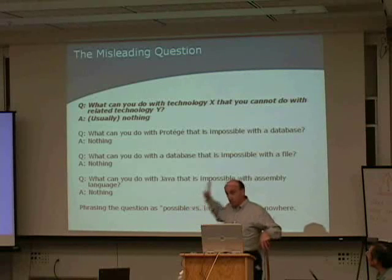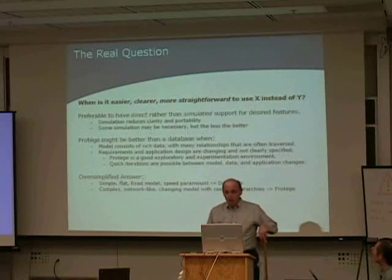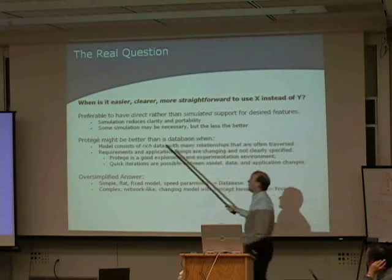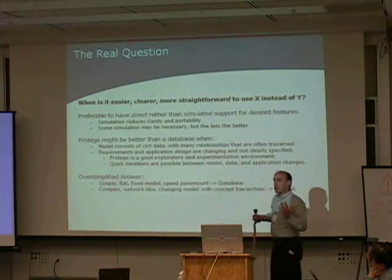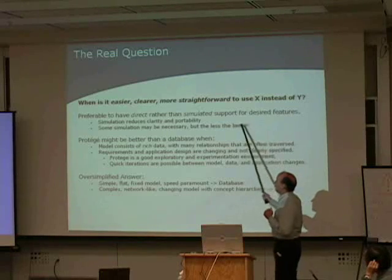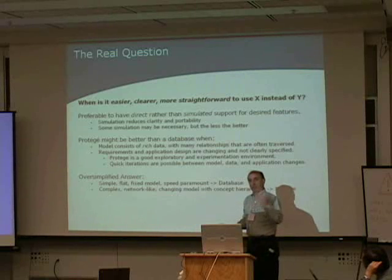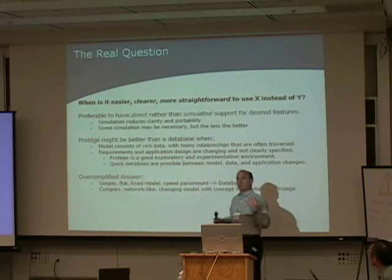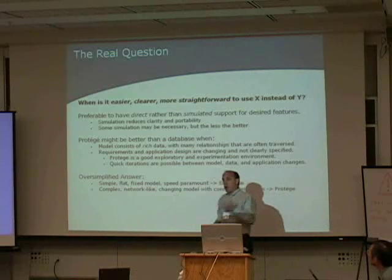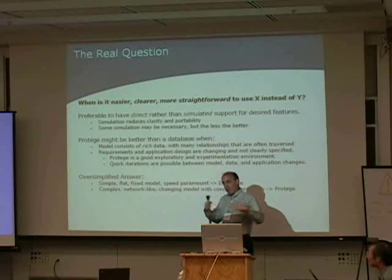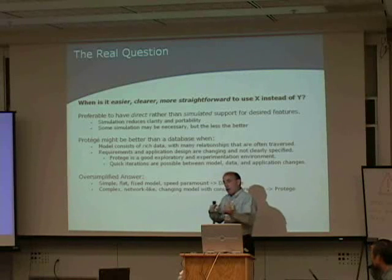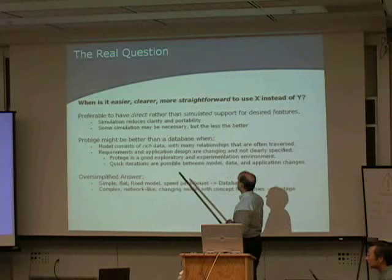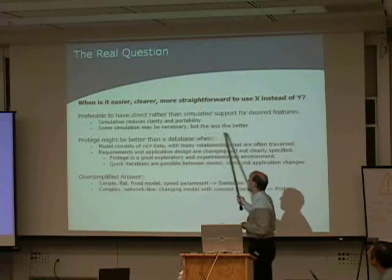The interesting and real question is: when is it easier, clearer, or more straightforward to use some technology X versus technology Y? In general, if your technology has direct support for the things you need, that's usually better than having simulated support. If you have direct support, people familiar with that technology will immediately understand what you're doing and what you're modeling — it will be clear to everyone. Whereas if you simulate the support, such as simulating inheritance in a database, all application developers have to communicate about how inheritance is being simulated. That simulation reduces clarity and portability. Some simulation is often necessary, but in general, the less the better.